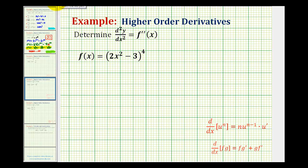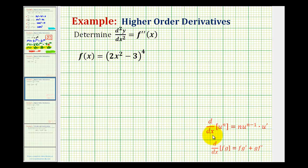We want to determine the second derivative of the given function, which means we need to find the derivative of the first derivative. So to determine the first derivative of the given function, we need to recognize that this is a composite function, so we'll have to apply the extended power rule that includes the chain rule.